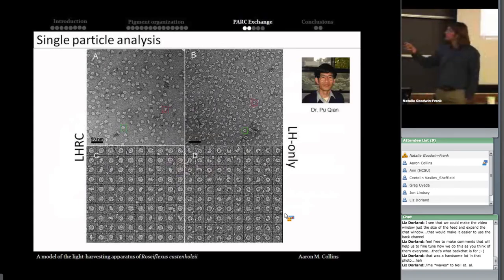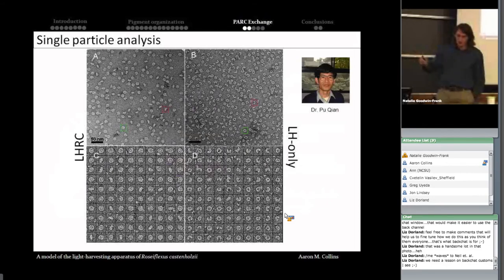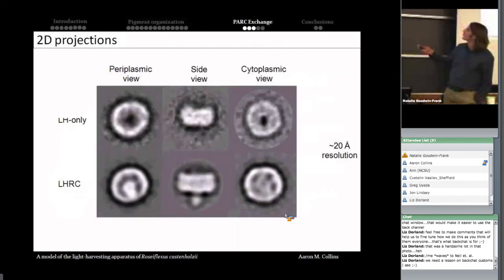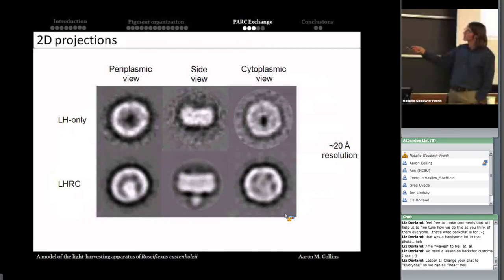But going through and using some software to align these particles, we actually generated a series of projections. And these are those projections here. On the top row, we have the LH-only. And on the bottom, we have the LH-RC. And we can separate these into what we think are different views. A view into the periplasmic side, or the periplasmic face of the complex facing out of the board here. A side view. And then one for the cytoplasmic view. From this, we can very clearly see in the side projection some electron density which was sticking out of the complex. We think this is almost undoubtedly the C subunit from the reaction center, which would be protruding into the periplasmic space. That's responsible for this light region that we see here in what we call the periplasmic view.